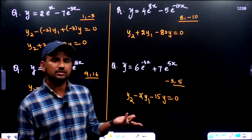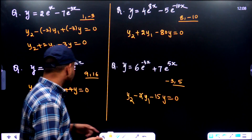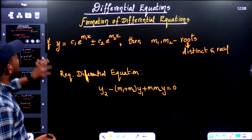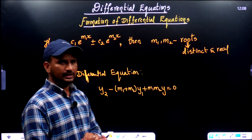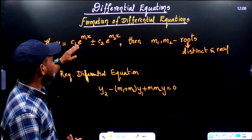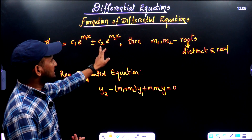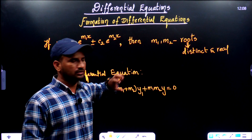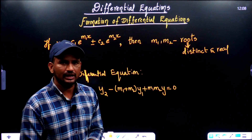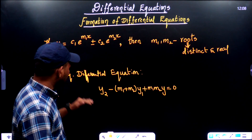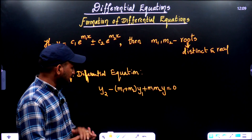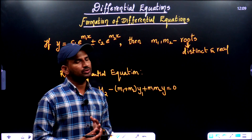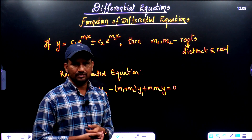So this is the fun way to answer this type of question. When you are given a solution, we extract the roots m1 and m2 — those are distinct and real. We write the differential equation using: y2 - (m1 + m2)·y1 + m1·m2·y = 0.